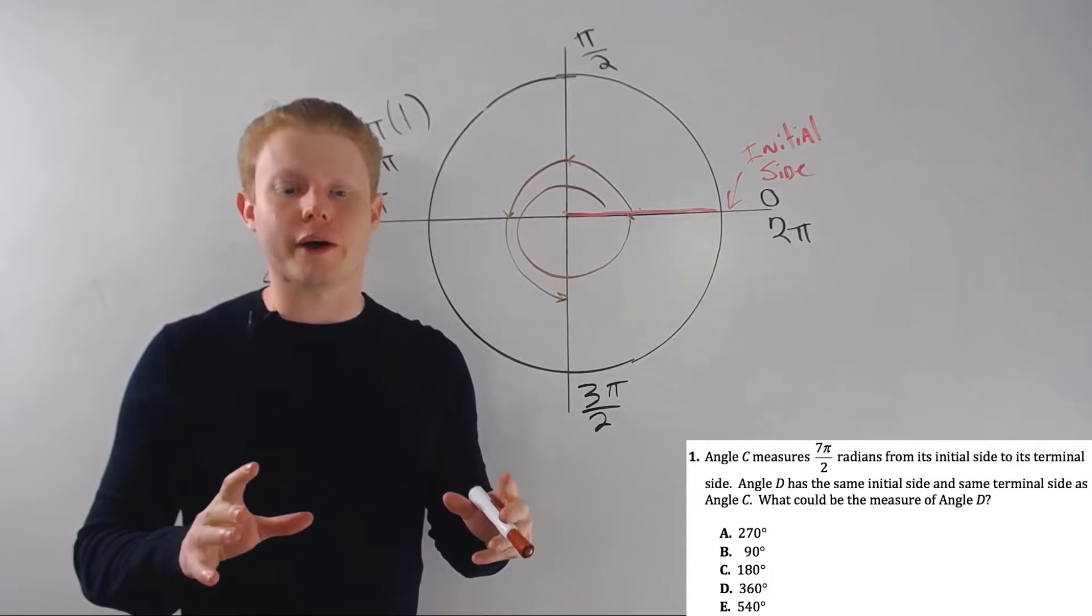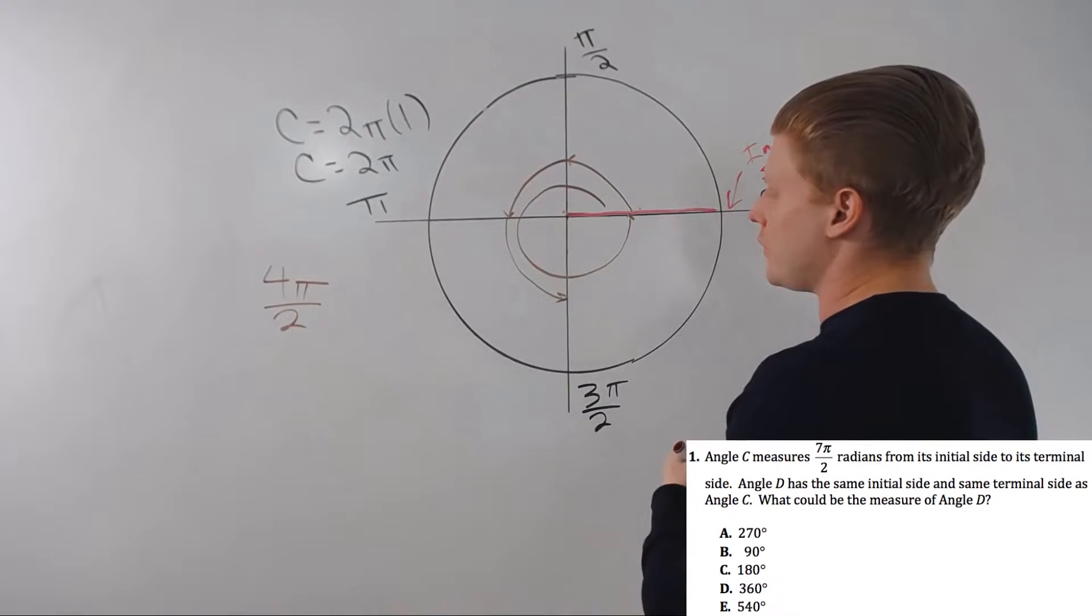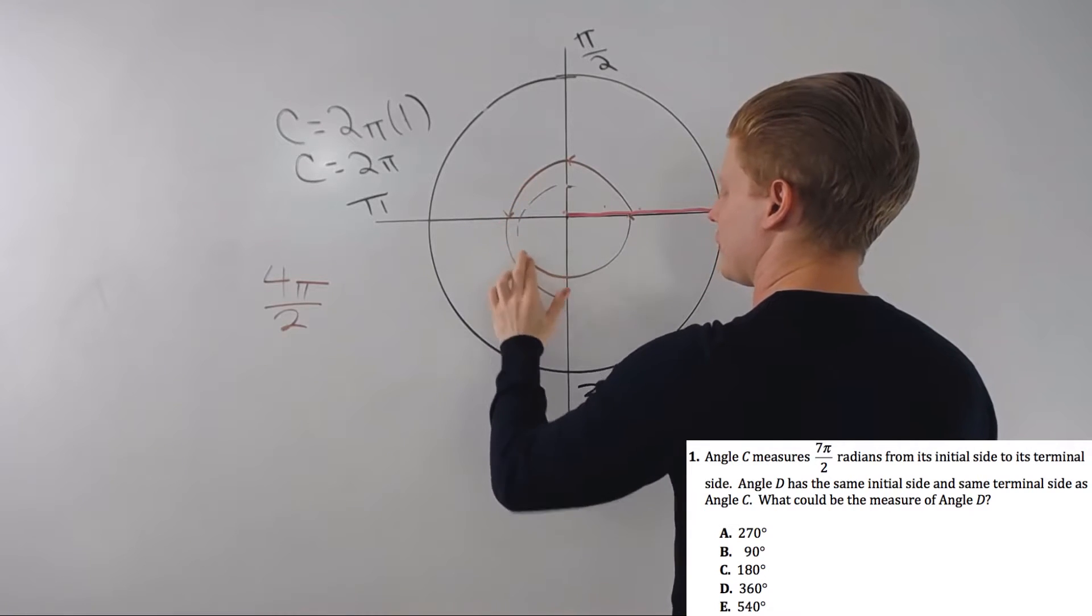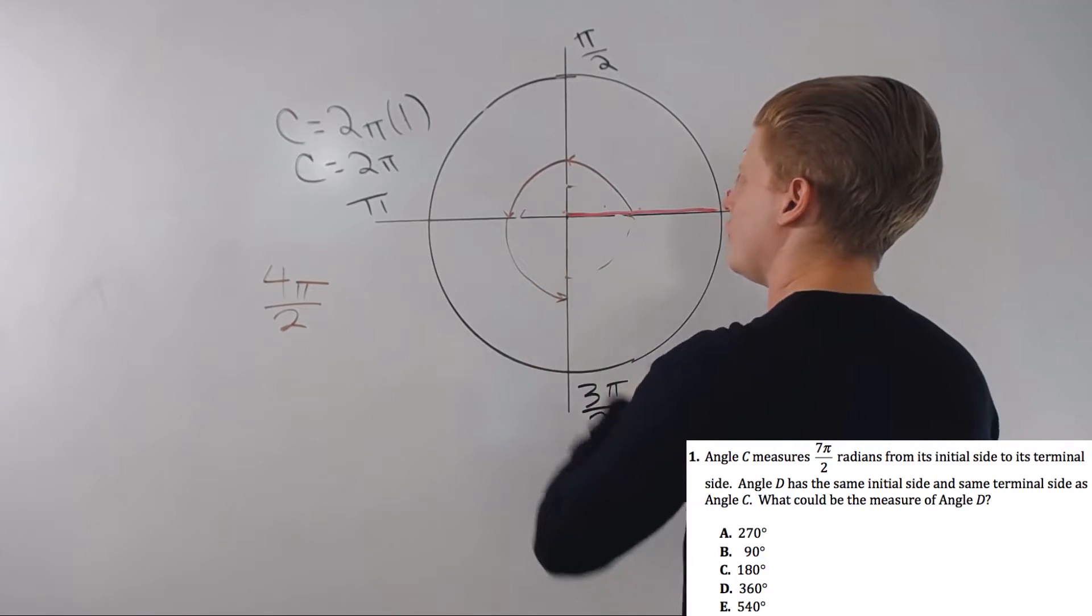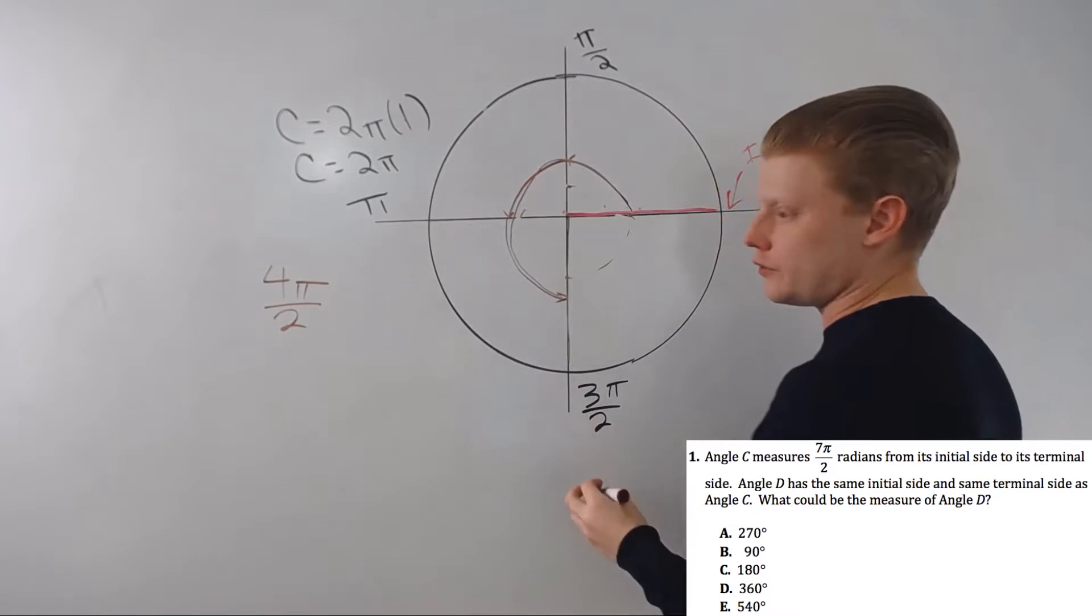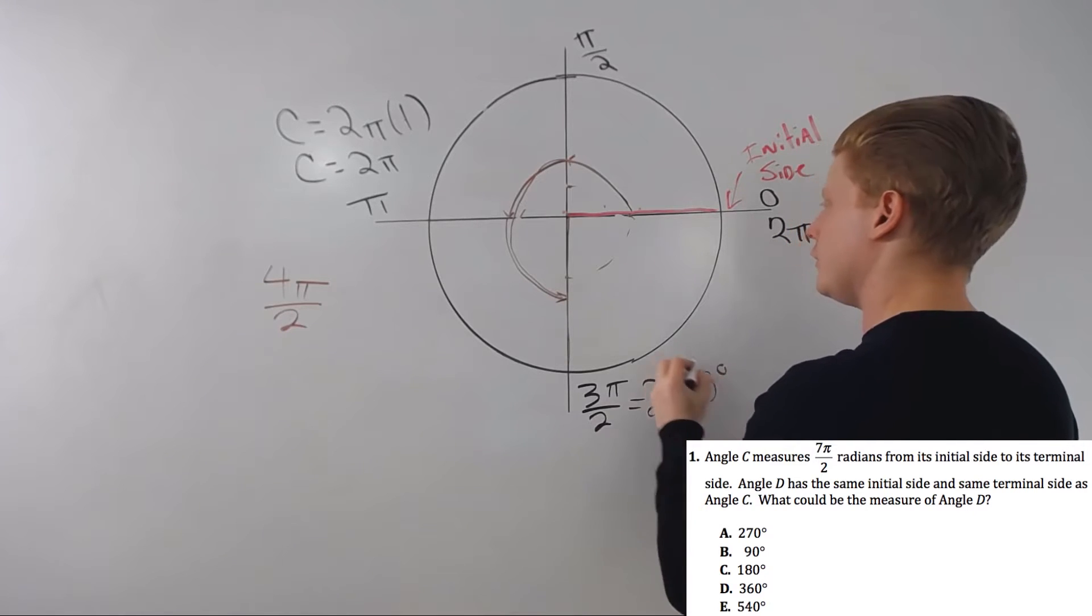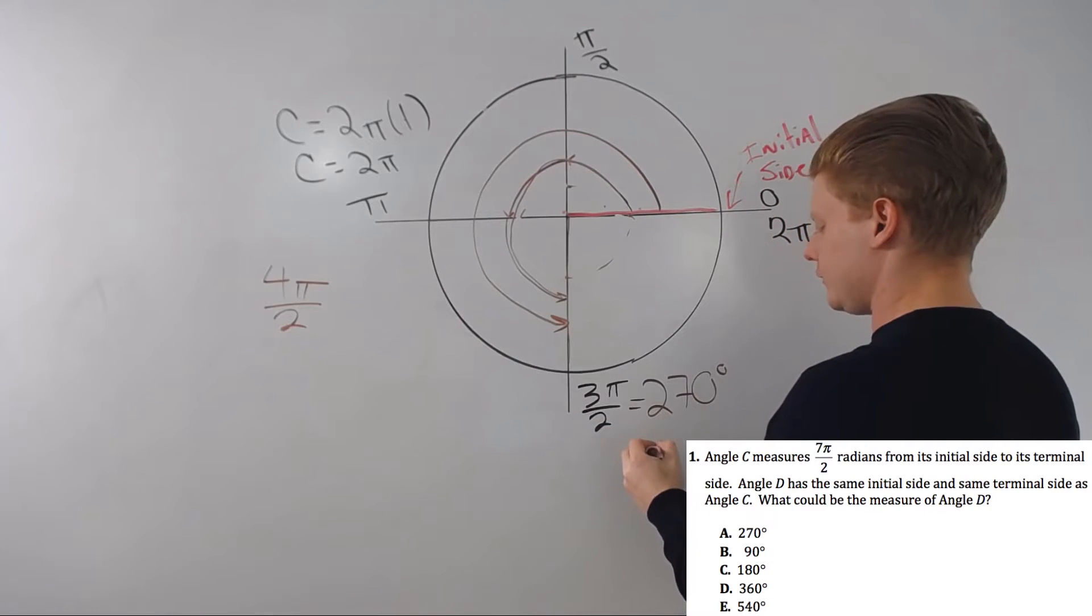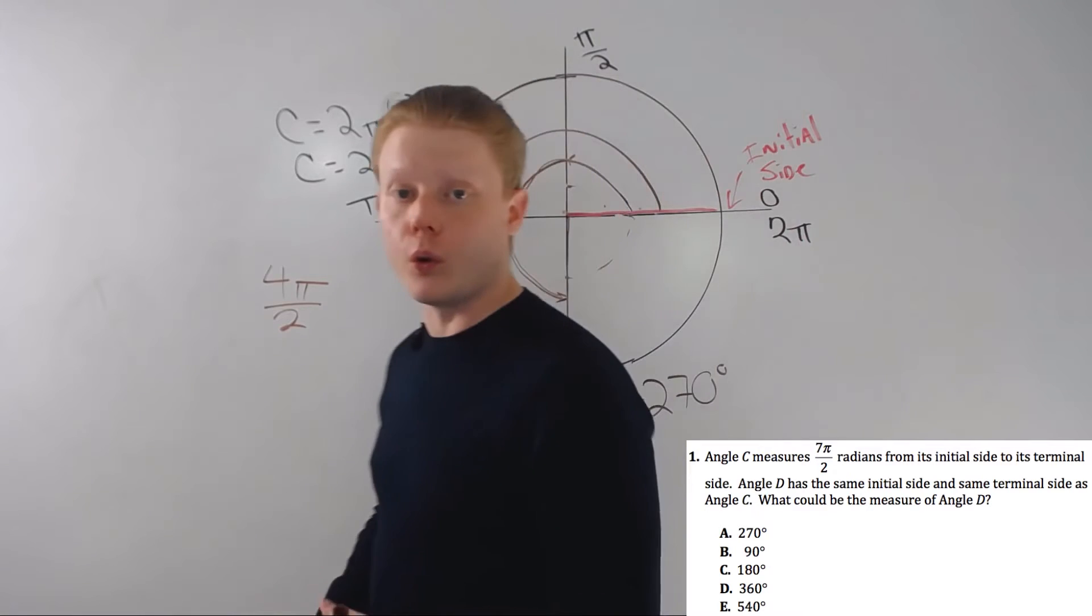The more you can break things into bite-sized pieces, the better off you'll be. So where do we finish? We finish over here at 3π over 2 radians, a.k.a. 270 degrees. So if the second angle that's less than 360 has the same initial side, same terminal side, it's going to be 270 degrees, or 3π over 2.